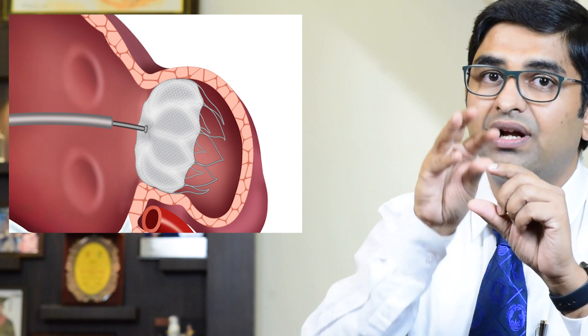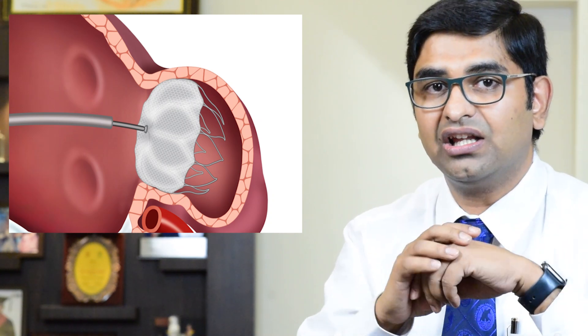The left atrial appendage is where 90% of clots form. A procedure can be performed to occlude it — left atrial appendage occlusion. This prevents embolic complications and may reduce the need for long-term anticoagulation. This concludes the discussion on atrial fibrillation.